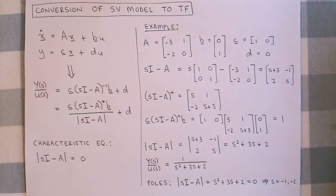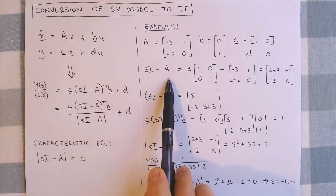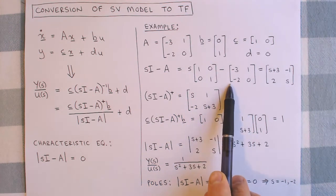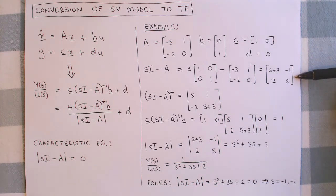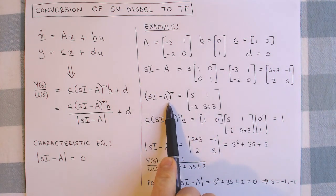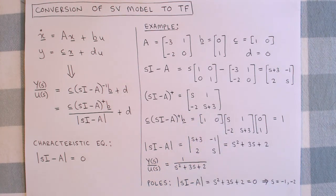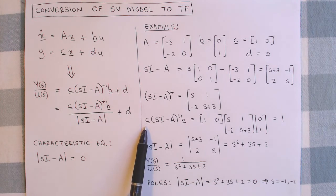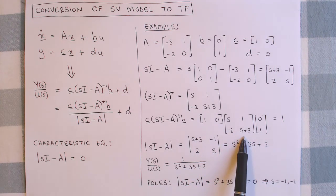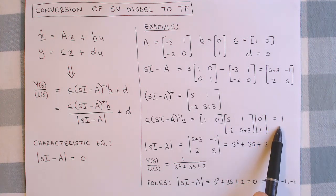The state variable system is the same as the one on the previous page, and we want to calculate its transfer function. Let's calculate matrix SI minus A first. We multiply the Laplace variable with the identity matrix and subtract the matrix A, which gives us the following matrix written in terms of the Laplace variable S. The adjoint of this matrix is given by the following. We can now write the numerator of the transfer function as vector C times the adjoint of SI minus A times vector B, which gives us the answer of 1.